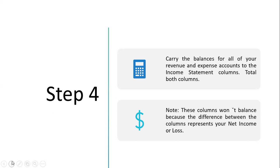In step four, we carry the balances for all revenue and expense accounts to the income statement columns and total both columns. One thing to note is that the income statement columns won't balance like the other columns — the trial balance, adjustments, and adjusted trial balance all balance. The income statement columns won't balance because the difference between the columns represents your net income or net loss.